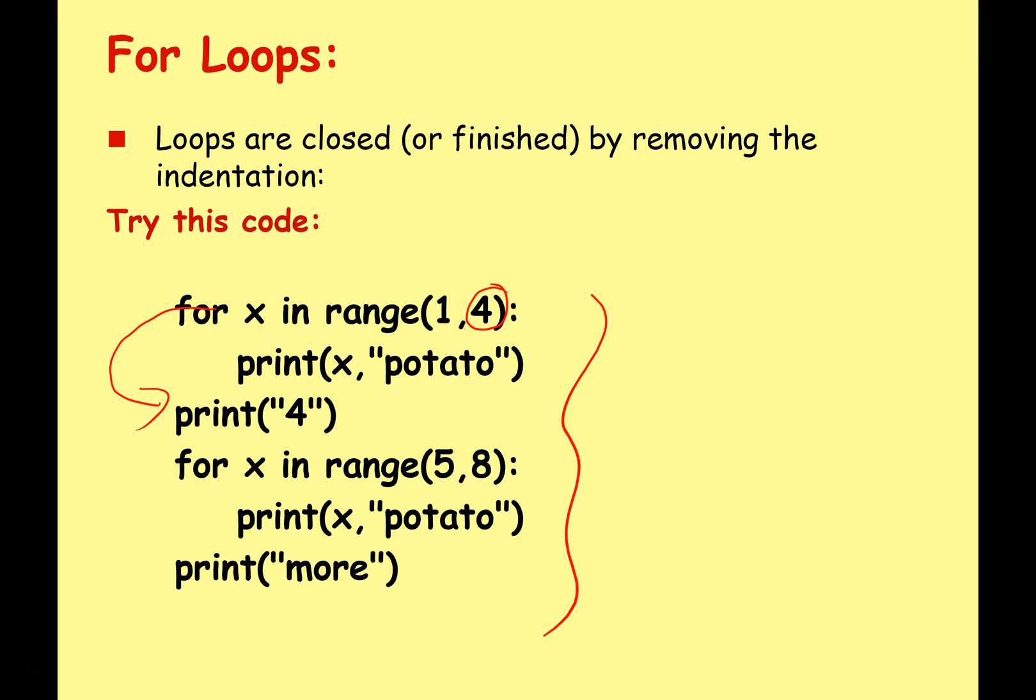Then it's going to go to the second loop and print 5 potato, 6 potato, 7 potato. This will get to 8, it'll exit, and then it'll print more. So type it in, run it, check it, see you understand it. We'll get that whole song one more time: 1 potato, 2 potato, 3 potato, 4, 5 potato, 6 potato, 7 potato, more. Oh isn't that fun, it's like doing nursery rhymes.